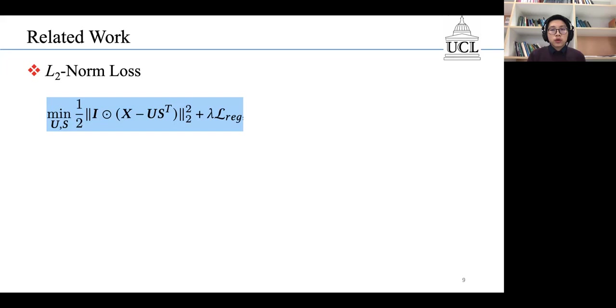So, the L2 loss is smooth, but it is sensitive to outliers. When X contains outliers, if we still minimize this objective function, then US transpose may not capture the true QoS values.